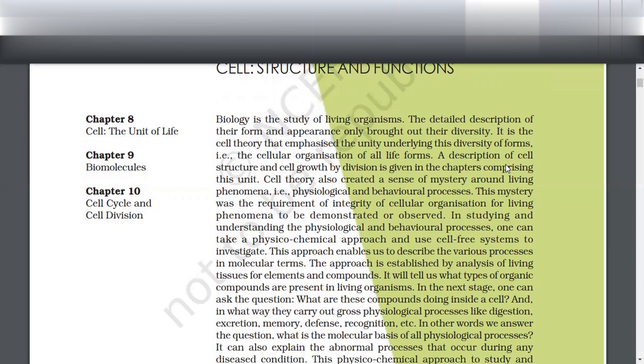Then came Purkinje, who discovered the protoplast. Protoplast means if you take a plant cell and remove the cell wall, the remaining part is called the protoplast. Purkinje discovered this.